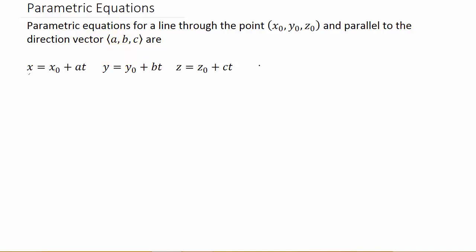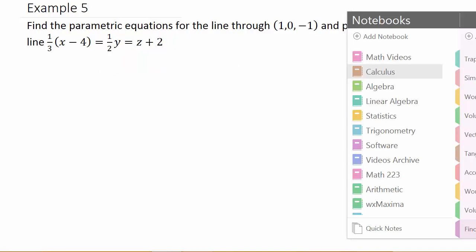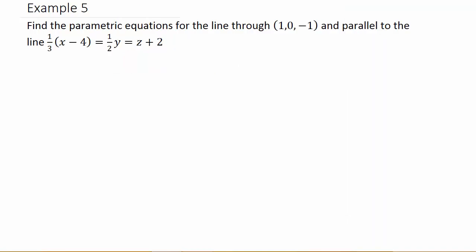So you might want to check them all out. I try to hit all the different scenarios. All right, so here it says find the parametric equations for the line through 1, 0, negative 1 and parallel to this line here. So parallel to this line.